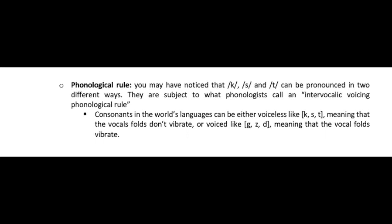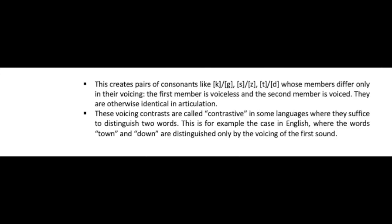You may have noticed that K, S, and T can be pronounced in two different ways. They are subject to what phonologists call an intervocalic voicing rule. Consonants can be either voiceless (like K, S, T — where the vocal folds don't vibrate) or voiced (like G, Z, and D — where the vocal folds do vibrate). This creates pairs like K/G, S/Z, and T/D, whose members differ only in voicing.